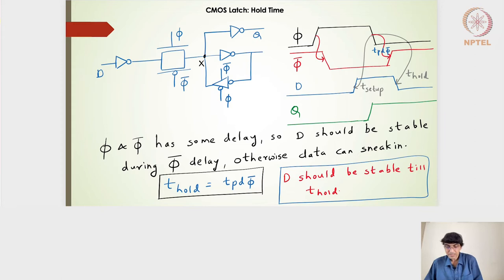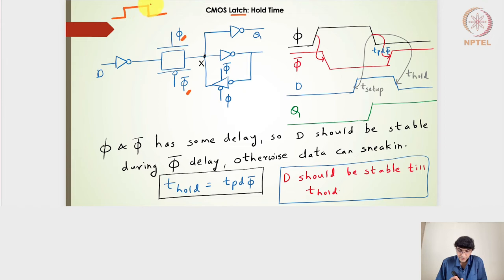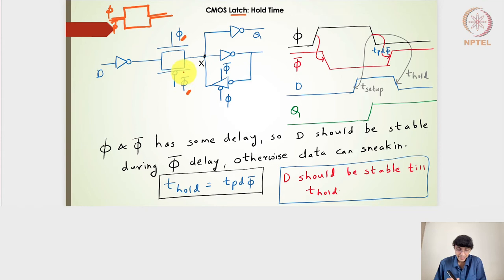The other significant static timing analysis parameter is the hold time. We return to the recommended CMOS latch design. Notice that phi and phi-bar are present: one goes to the NMOS transistor and the other to the PMOS transistor. Until now we assumed that when the clock changes from high to low, the clock bar also changes at the same time, but this doesn't always happen.